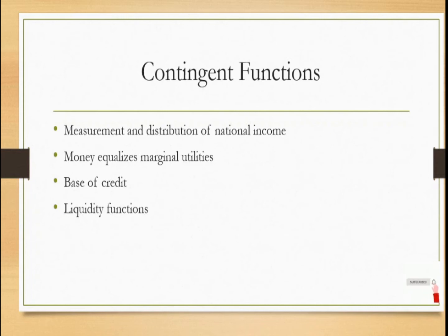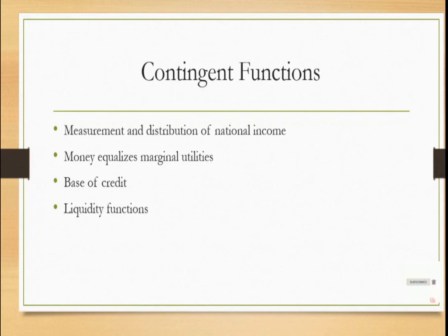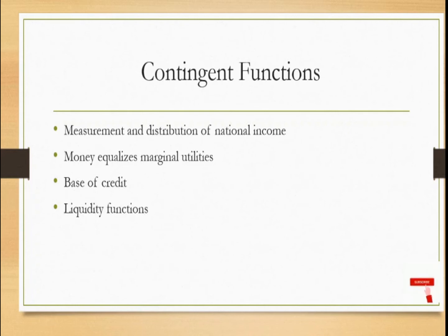If I want to make a comparison between two countries — say India and the US, India and China, India and Pakistan — that comparison is done on the basis of many aspects. For economic growth, we look at national income, per capita income, GDP, and GNP. But all these concepts are expressed in terms of money itself. Without money, we cannot measure a country's national income or identify how it is distributed among the citizens. So money is very important as far as the contingent function is concerned.